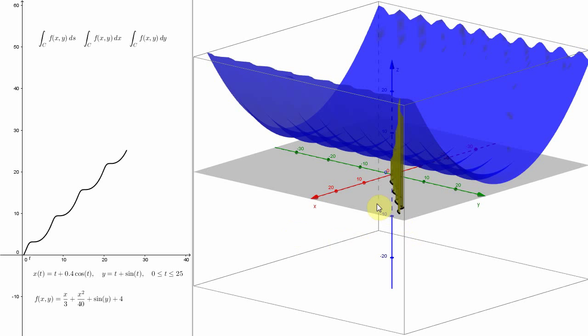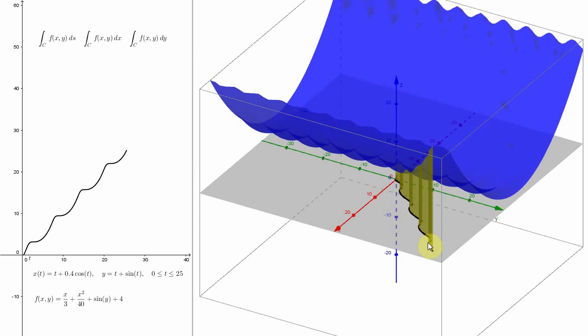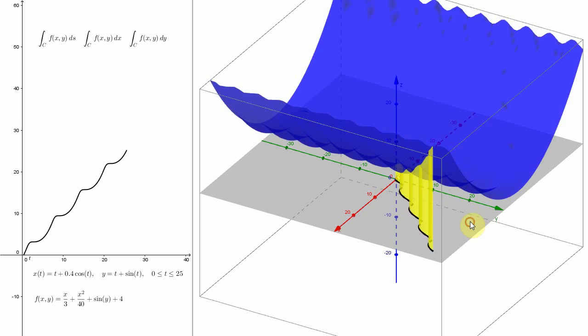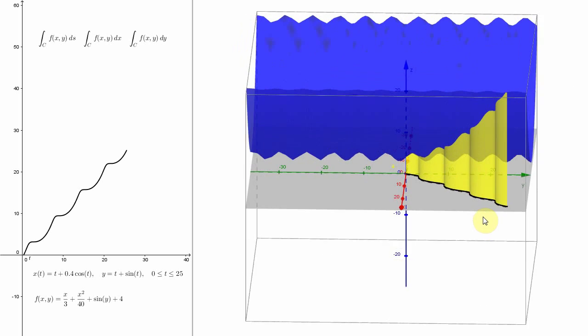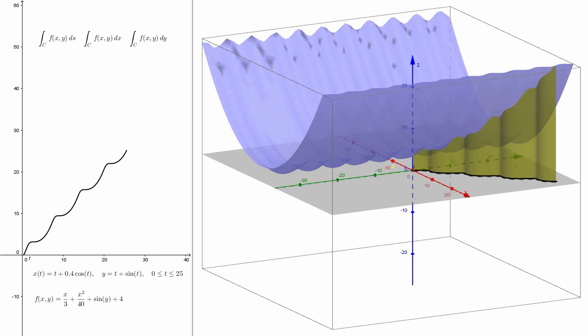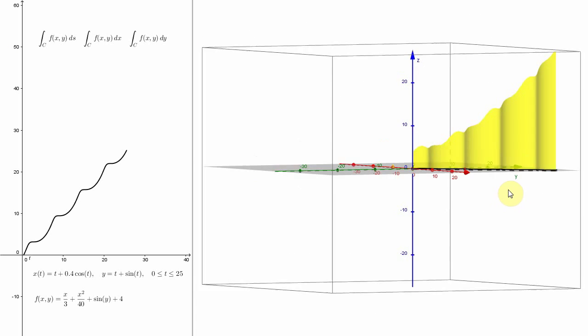Well, so what I did was I asked the computer to draw all the points that are above this black curve and under the blue surface, that's the graph of the function. And so you see this yellow colored thing there, let me actually hide the graph of the function. The area of this curtain, so to speak,